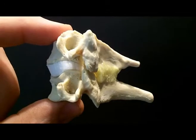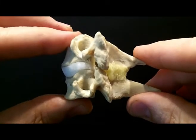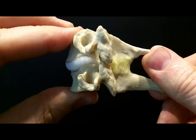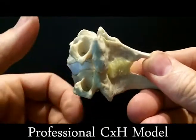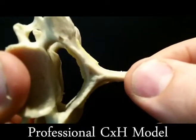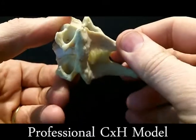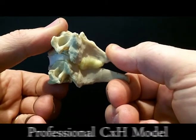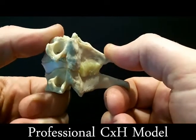Shown here is our professional CXH model, C5-6, without the ALL and PLL for demonstration purposes. We can demonstrate flexion and extension, and it's very helpful to have patients understand clearly where suspected pain generators are under their range of motion or the particular activities that cause their pain.